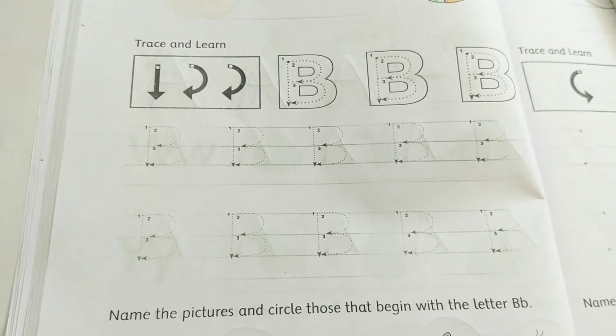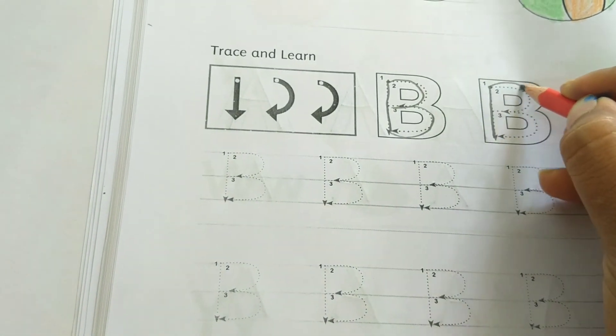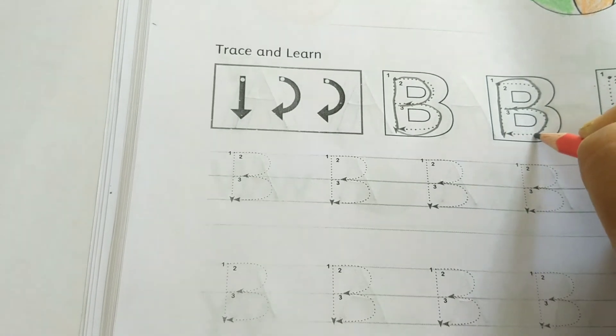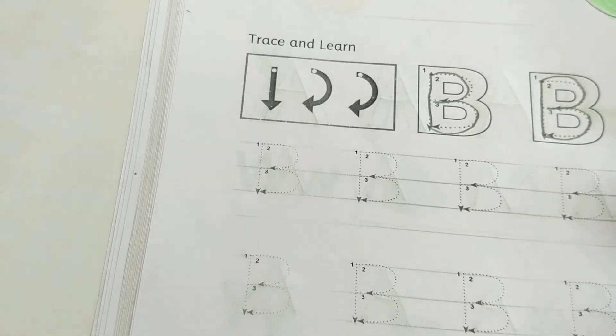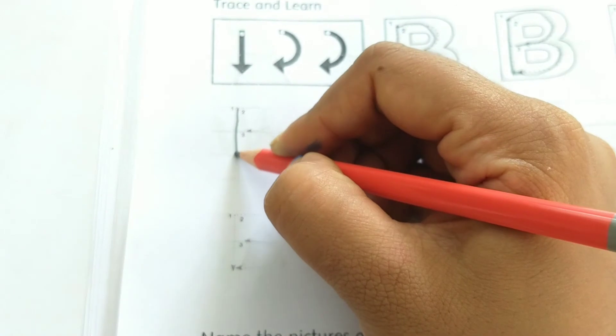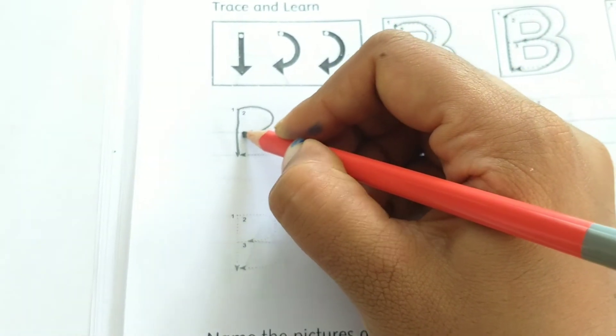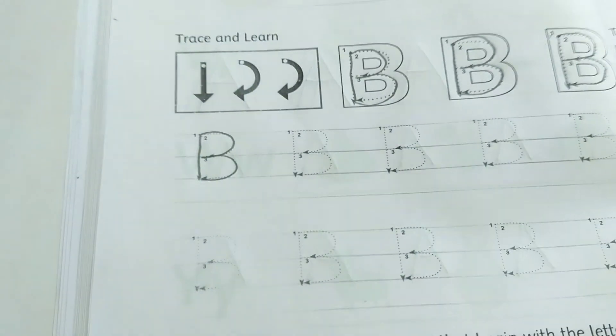Here you can see that letter B is made up of one standing line and two backward curves.